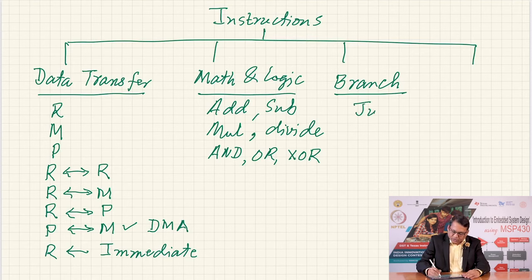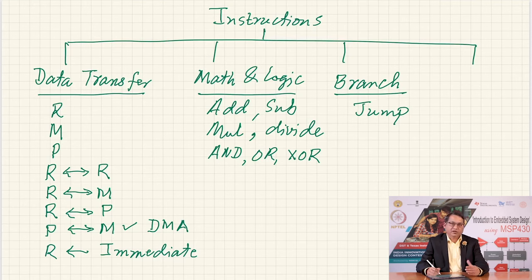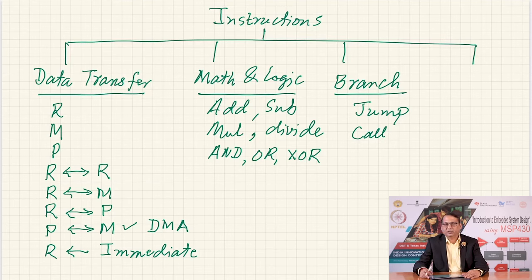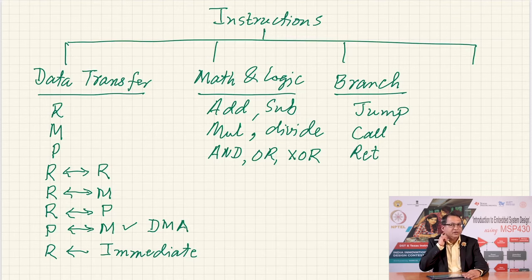Branch instruction types include jumping to an arbitrary location unconditionally, or conditionally based on flags in the microprocessor — for example, jump if a certain flag is set or reset. Similarly, you may want to call a subroutine, which could be unconditional or flag-based. Corresponding to a call, once you have finished executing a subroutine, you return to the main program using return instructions, which can also be unconditional or conditional.